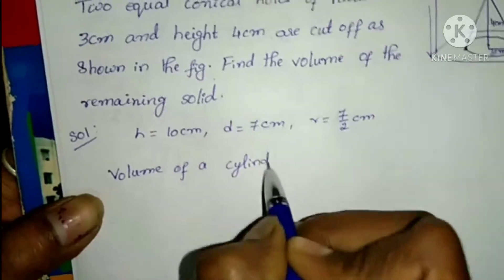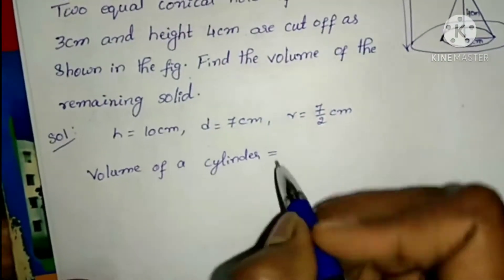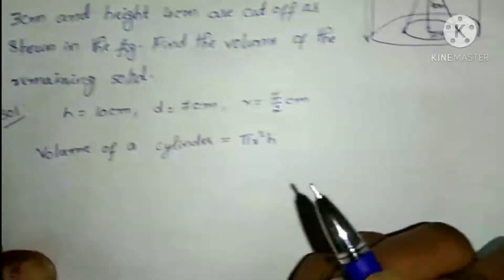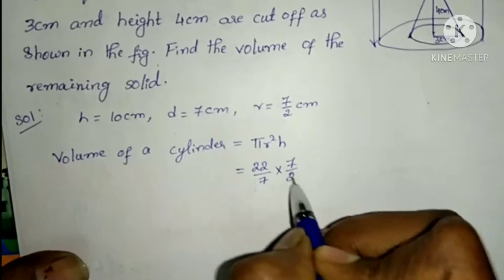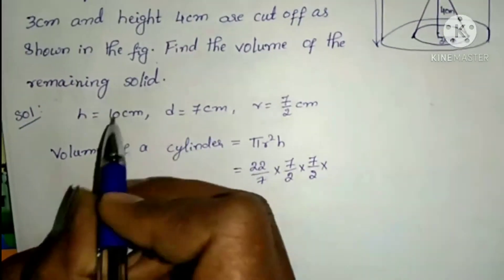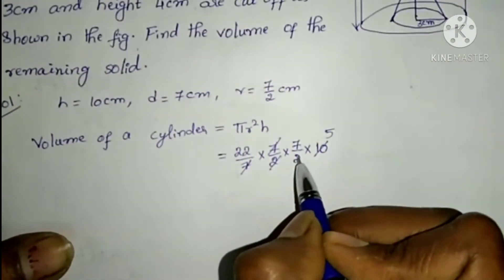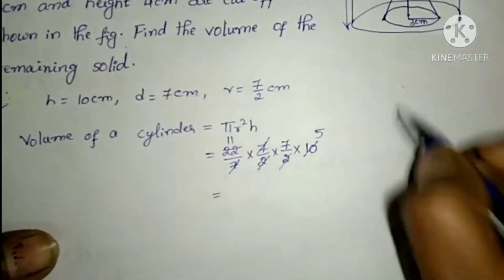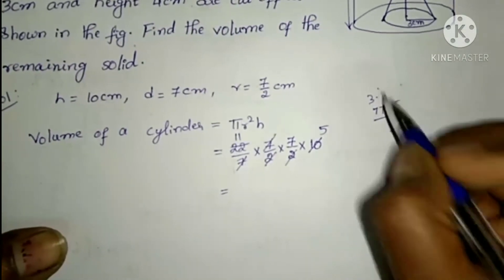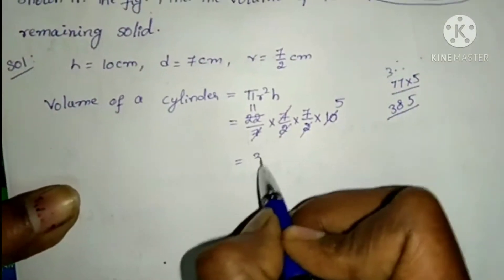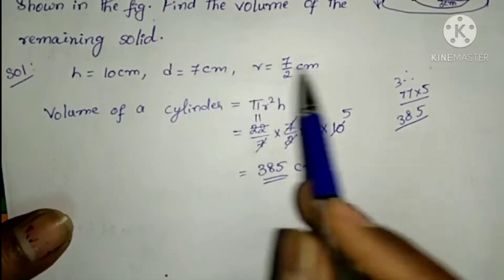Let's look at the formulas. Volume of a cylinder formula is π r² h. Substituting: π value 22/7, r = 7/2, height = 10. After cancellation: 22/7 × (7/2)² × 10 = 385 cm³.